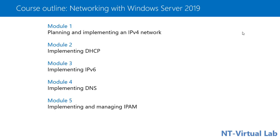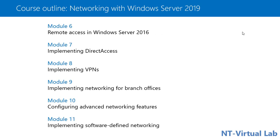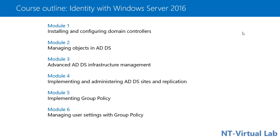Part 2 covers networking with Windows Server 2019. Topics include planning and implementing IPv4 networks, implementing DHCP, implementing DNS services, and managing IP address management (IPAM) for multiple DNS and DHCP servers. Module 6 covers configuring remote access such as routing and NAT services. Module 7 discusses DirectAccess, IPv6 networking, and implementing advanced networking features for branch offices, as well as an introduction to software-defined networking.